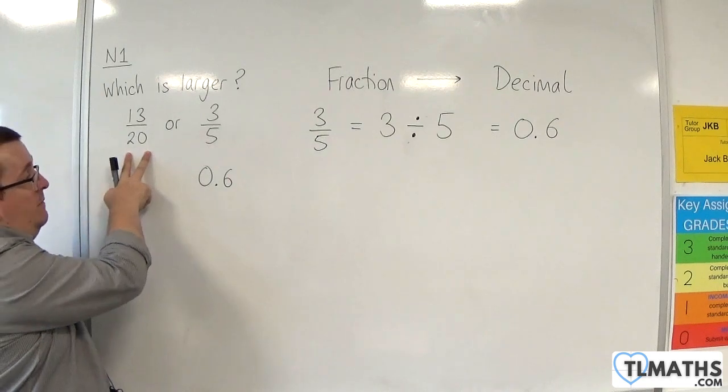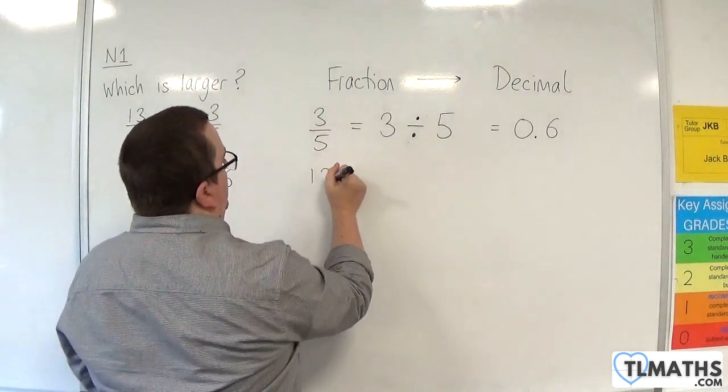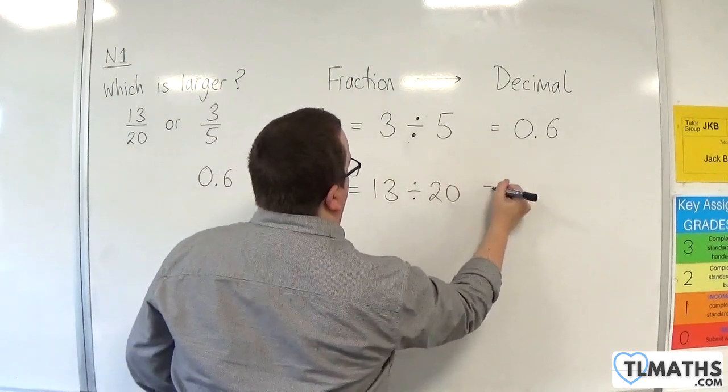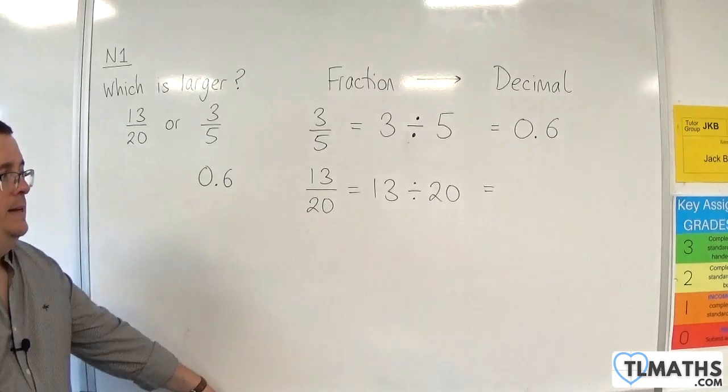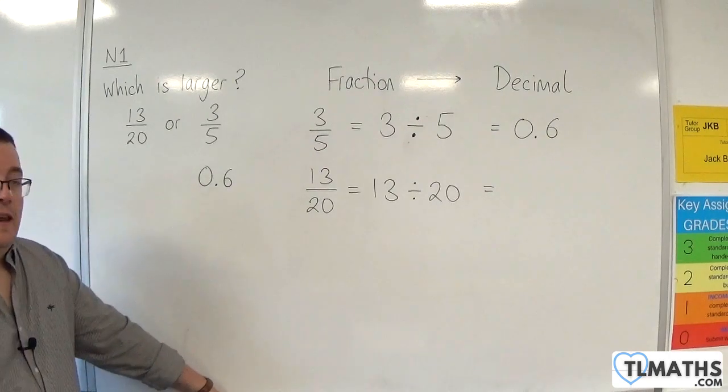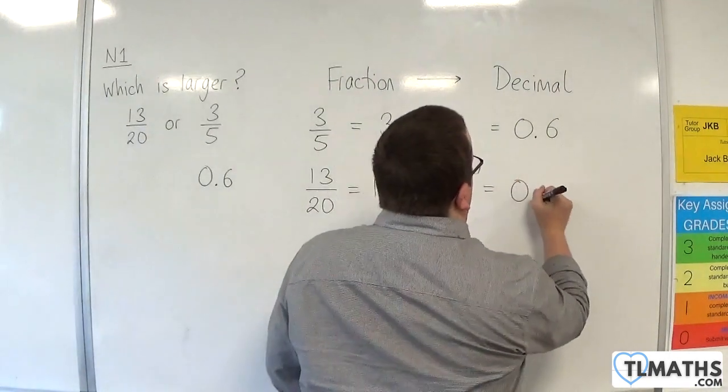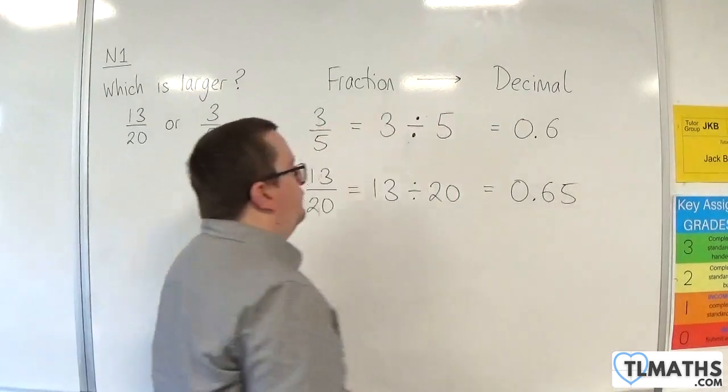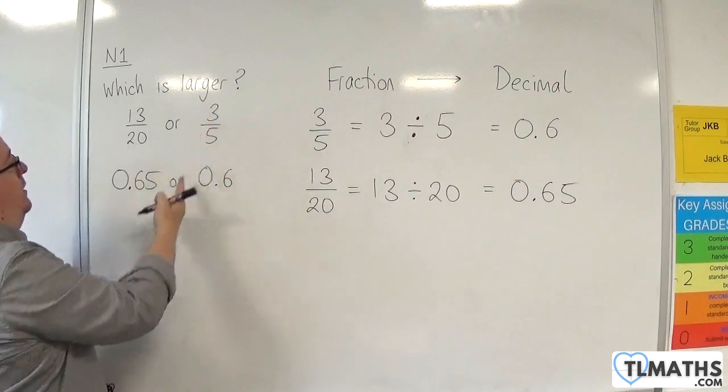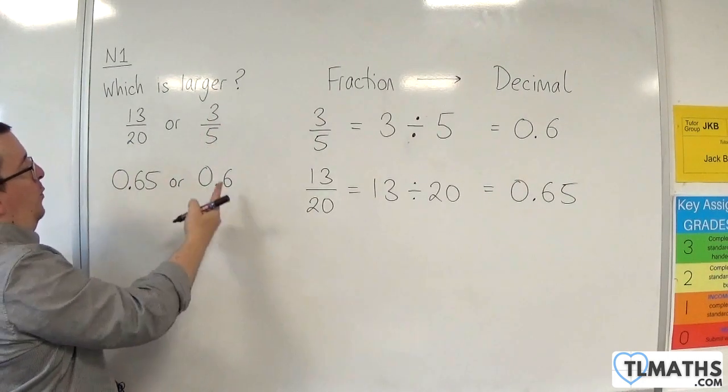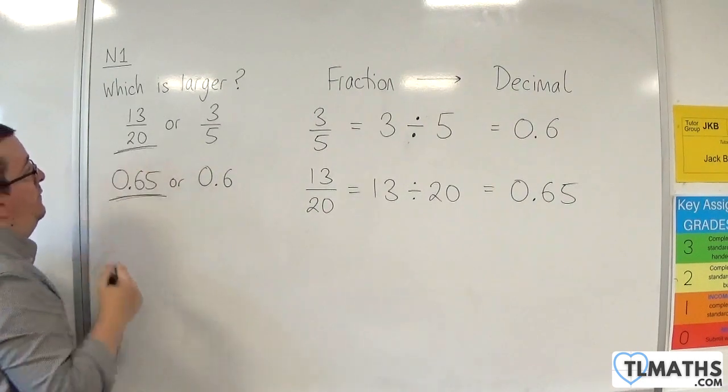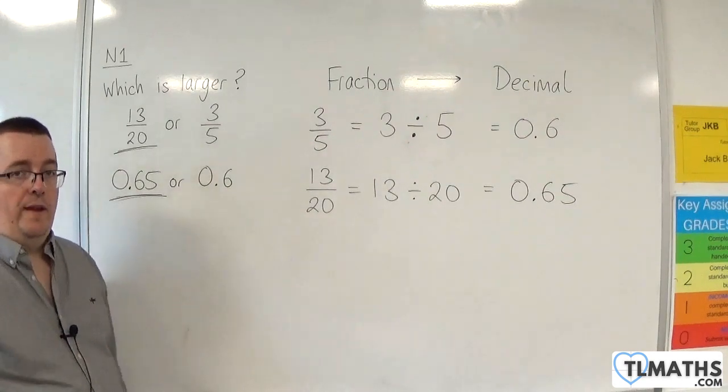Right, 13 over 20. Well, we'll do the same thing. 13 over 20 is 13 divided by 20. And again, you need to be able to do that longhand or be able to do that in your head. And that's 0.65. So, which is larger, 0.65 or 0.6? And of course, 0.65 is the larger one, so 13 over 20 is larger than three-fifths.